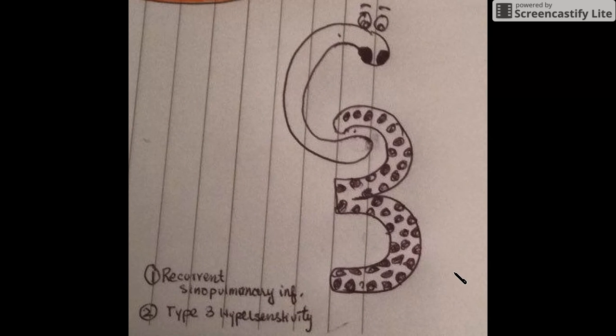So C3 deficiency is associated with recurrent sinopulmonary infections. And how you can remember it? You can see that I have made a C with big nostrils and a tree is hanging from his mouth.